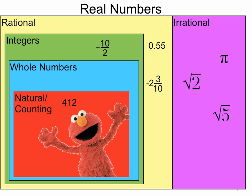Those are irrational numbers: pi, square root of 2, square root of 5. Those are all numbers that cannot be written as a fraction with an integer in the numerator.